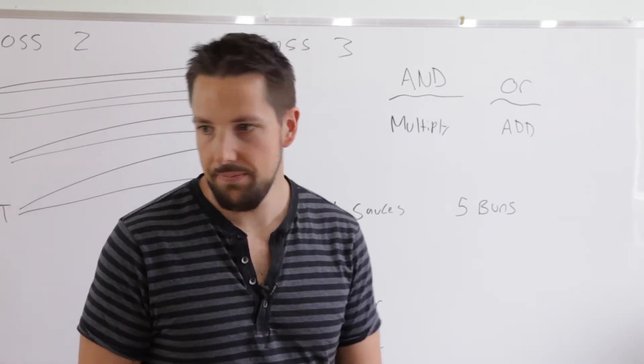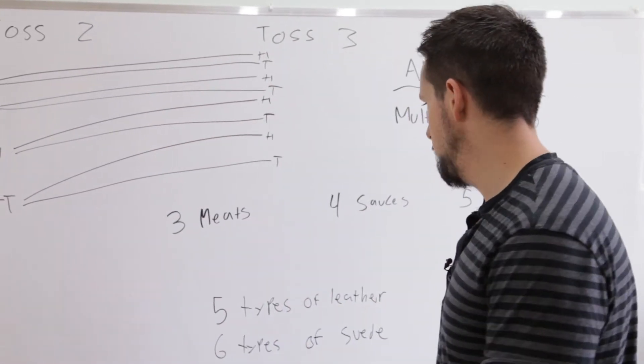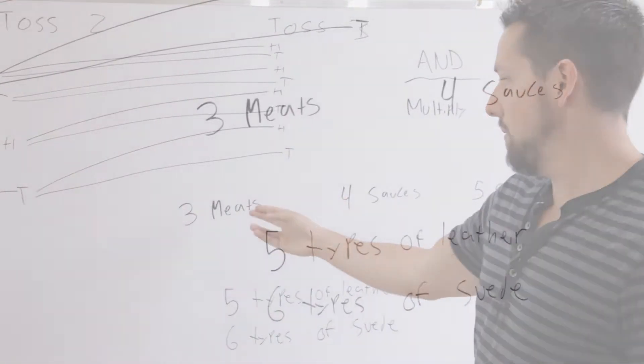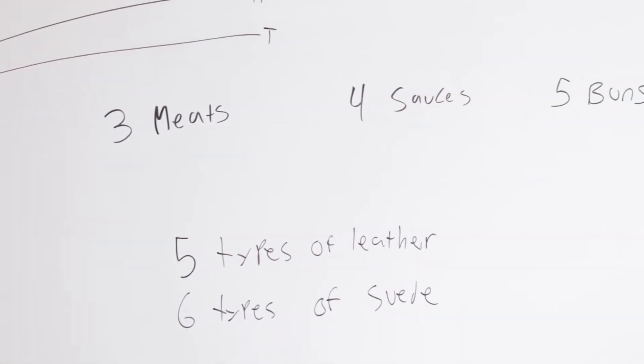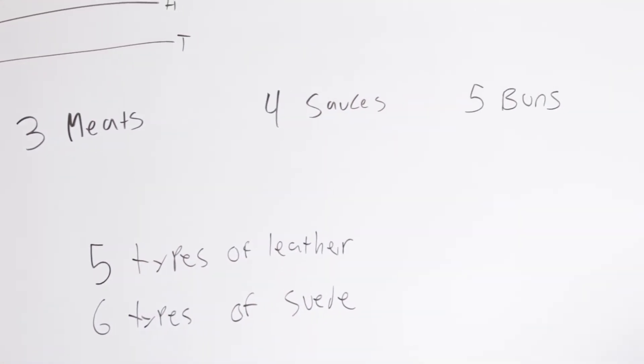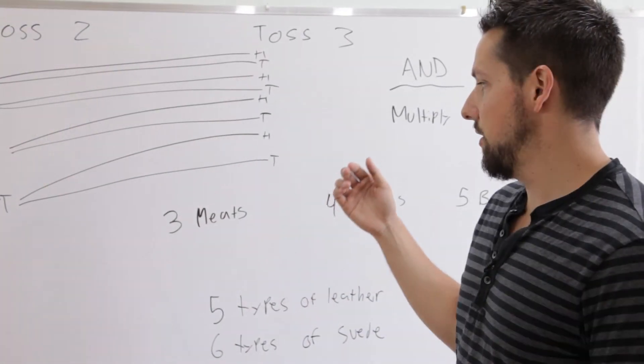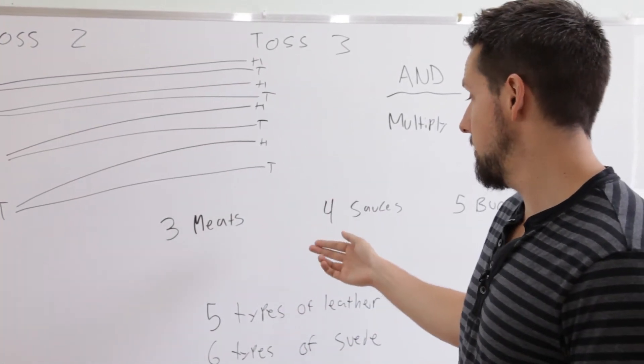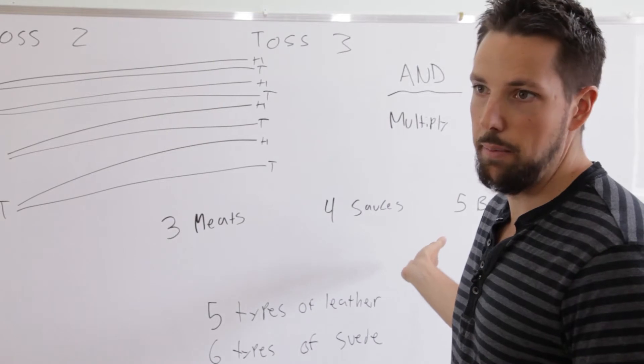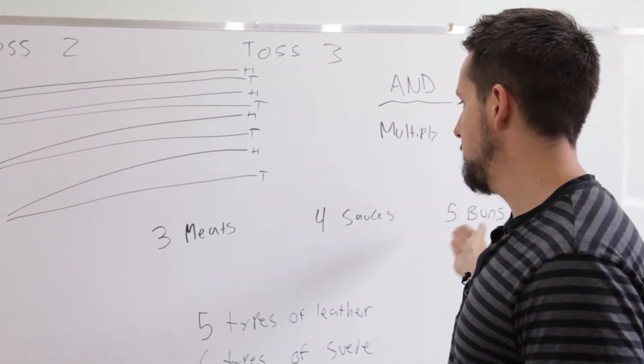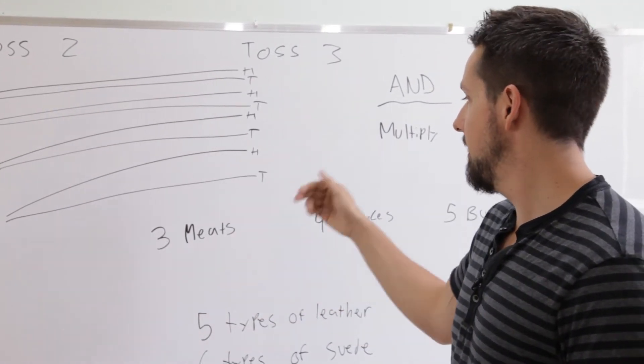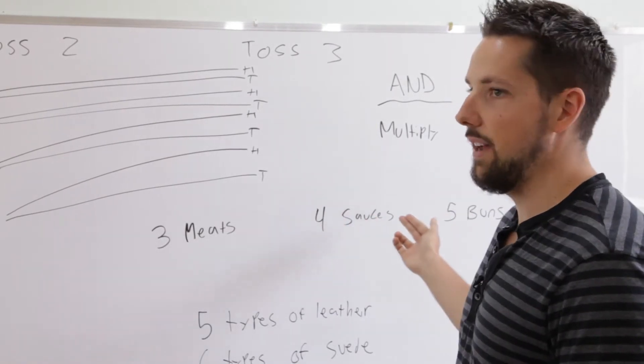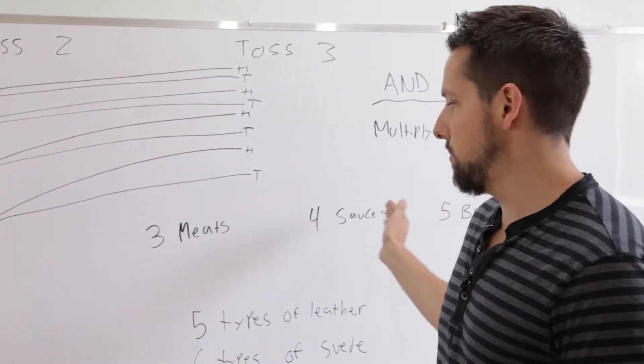So we have a couple more examples. Let's say we're making a sandwich. We have three meats, four sauces, five buns. And when you're making the sandwich, you're going to have meat and you're going to have a sauce and you're going to have a bun to put it on. So what are the total number of options? Well, three times four times five. So the and means multiply.